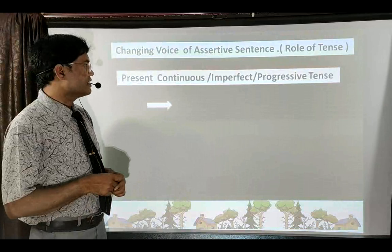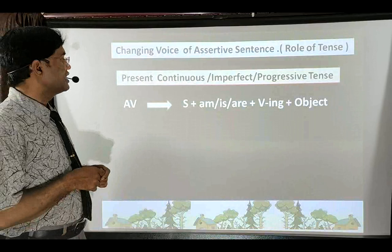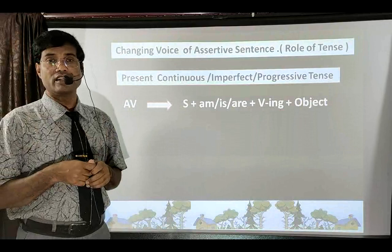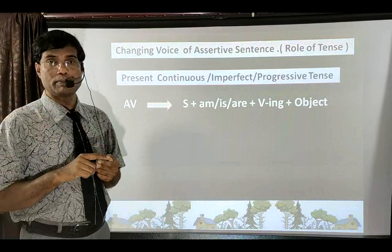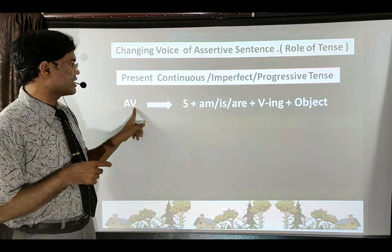Let us talk about Present Continuous Tense, also known as Present Imperfect or Present Progressive Tense. When the tense changes, the method of making passive voice also changes. To make passive voice, you must first understand the active voice. Until you identify the tense of the sentence, you cannot proceed with the passive voice process.